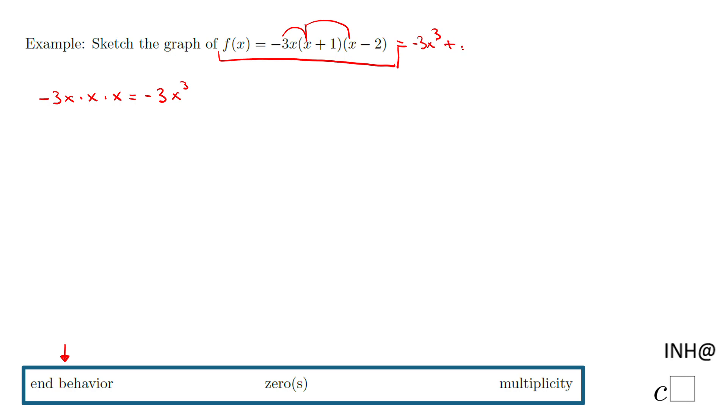So eventually if you multiply this guy, you're going to get negative 3x cubed plus blah blah blah. We don't really need the rest of the story. I'm looking to this one: this is a negative number, negative 3, and this one is an odd degree.